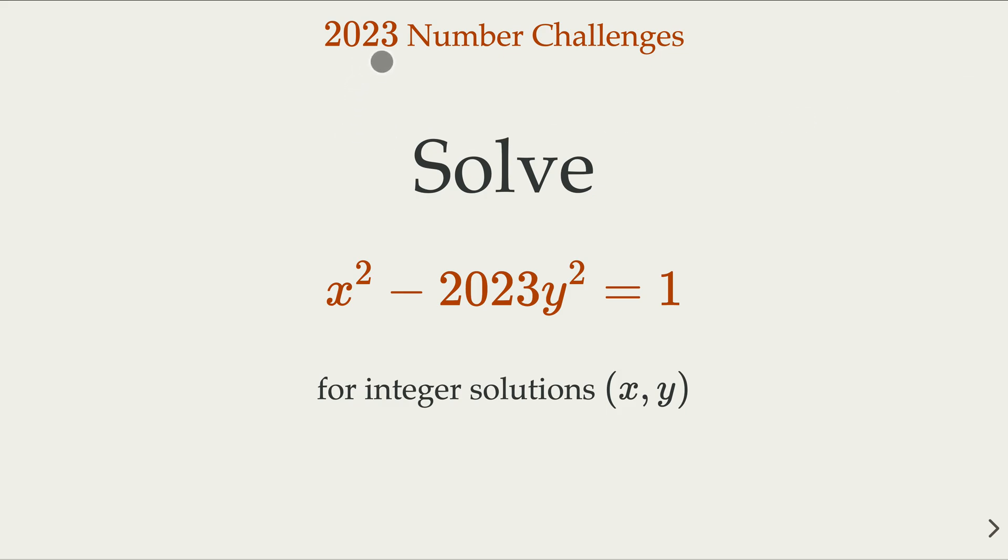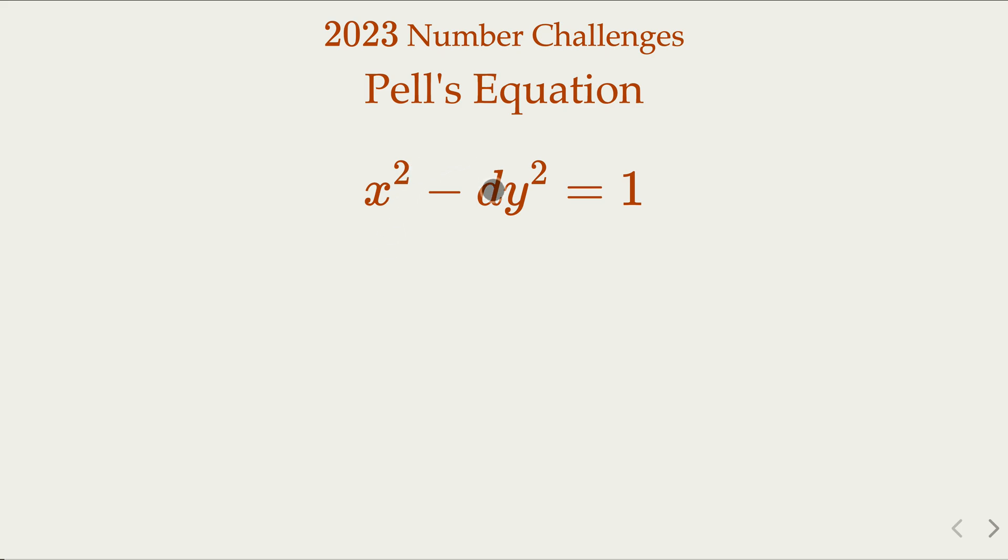This is another 2023 number challenge. We try to solve equation x squared minus 2023 y squared equal to 1 for integer solutions x and y. This is what is called Pell's equation, where d here is the integer, non-square integer.